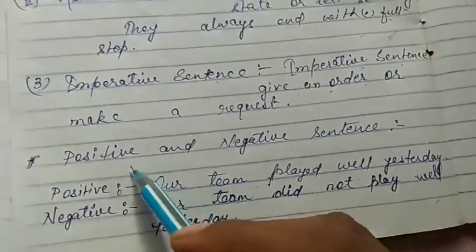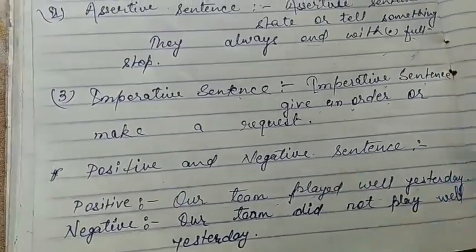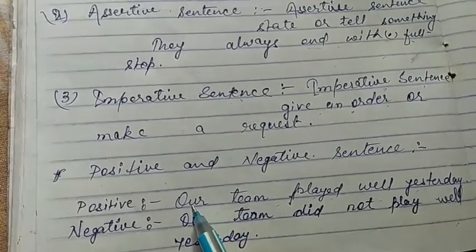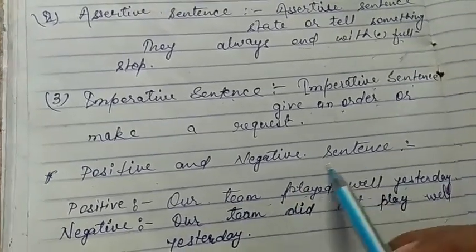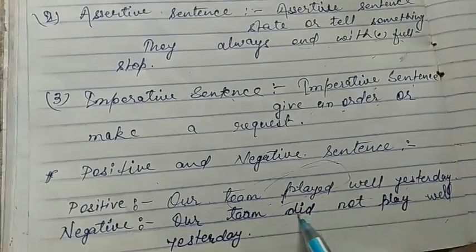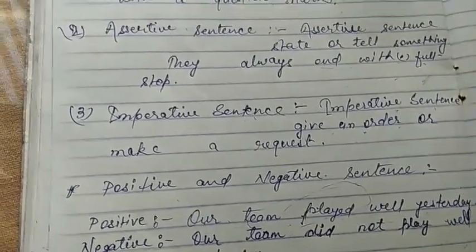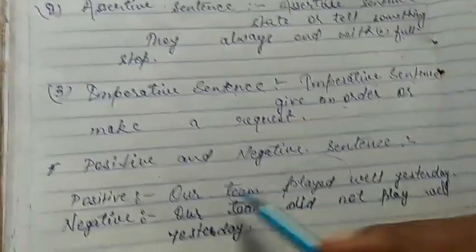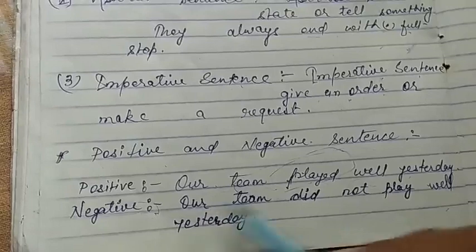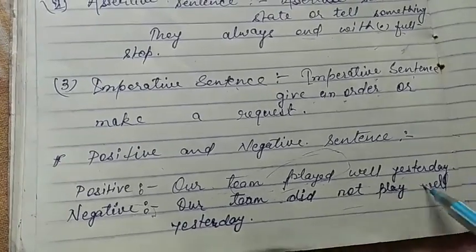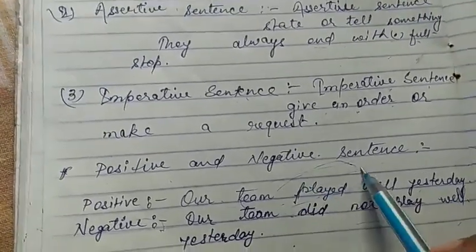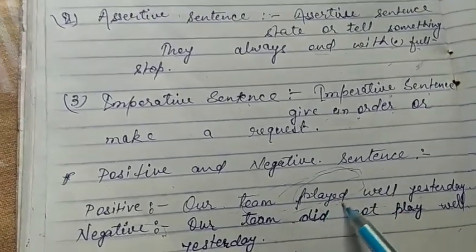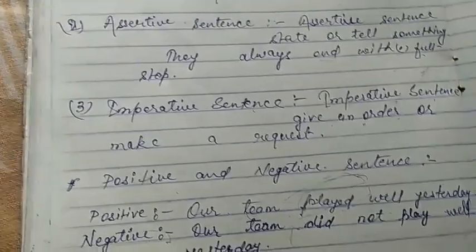Another topic is positive and negative sentences. A positive sentence example: 'Our team played well yesterday.' If one team played well, then another team did not play well — and that becomes the negative sentence: 'Our team did not play well yesterday.' If one team wins, the other will always be a loser.